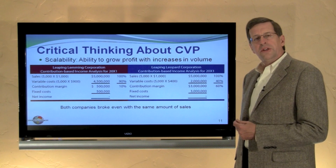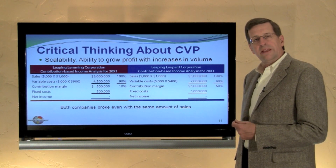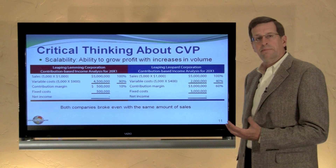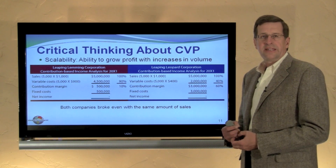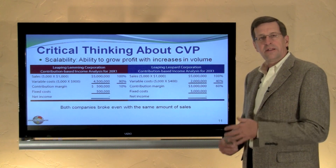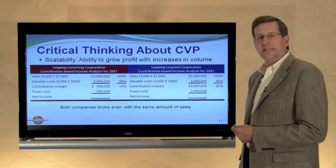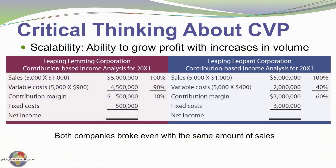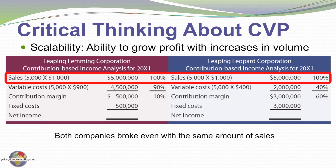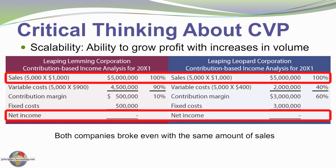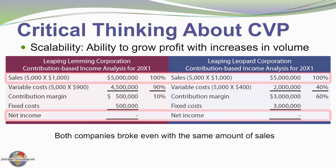Let's also use CVP analysis to think about the ability to judge a business's scalability — in other words, how its profitability is affected with increases or decreases in sales volume. Here I've got two companies: Leaping Lemming on the left and Leaping Leopard on the right. Both companies have sales of 5,000 units at $1,000 per unit, or total sales of five million, and both broke even — net income was zero for each company at that sales level.